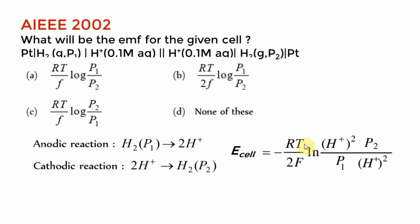Simplifying: the minus sign and rearrangement gives RT/2F × ln(P₁/P₂). Note that the answer option was missing the LOG factor — so if assuming LOG is included, the answer would be option B: −(RT/2F) × log(P₁/P₂).